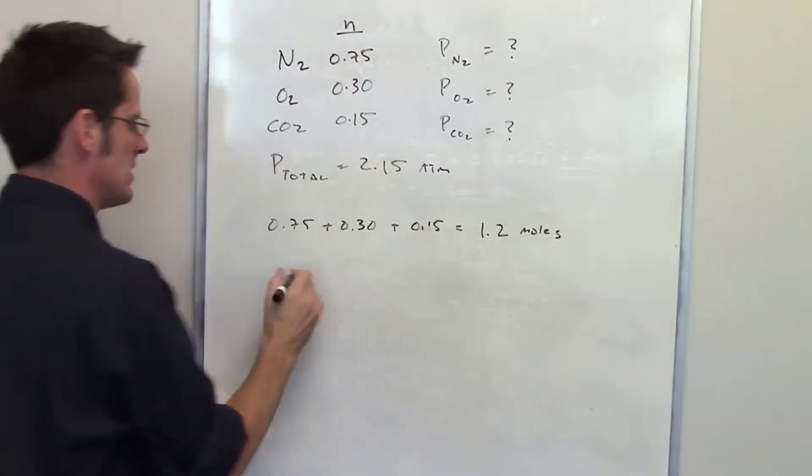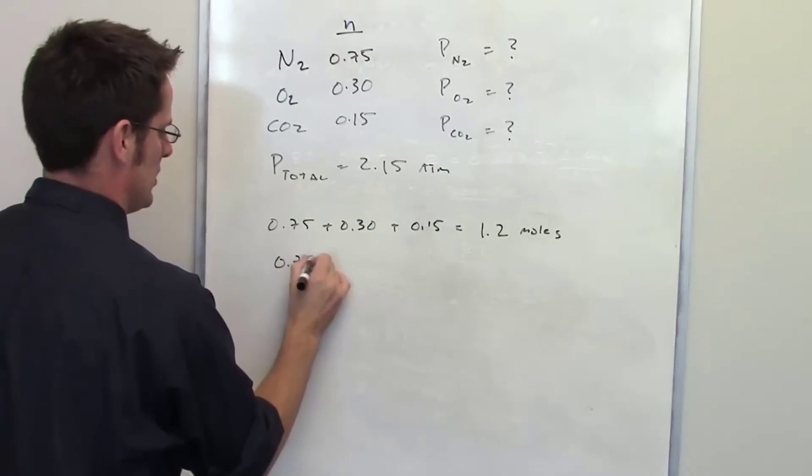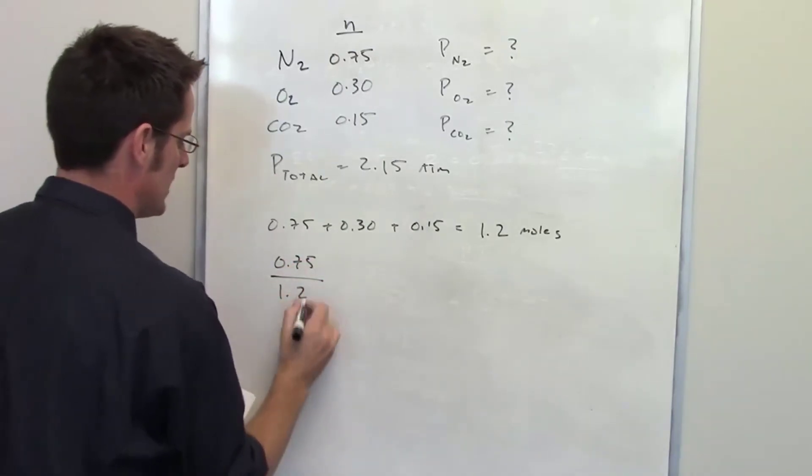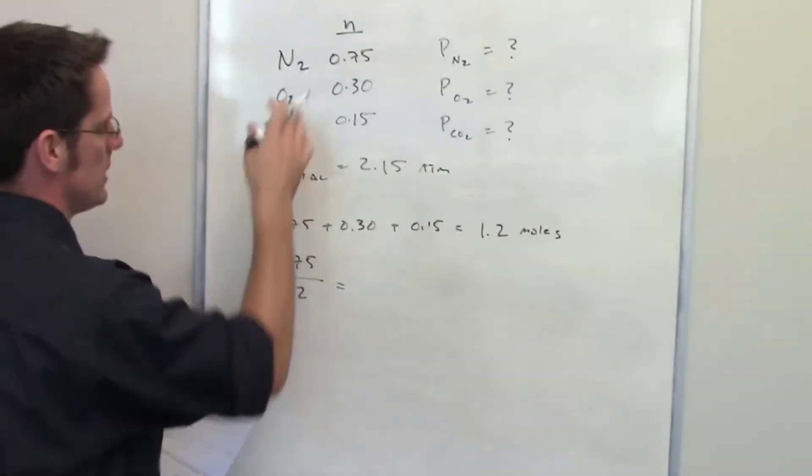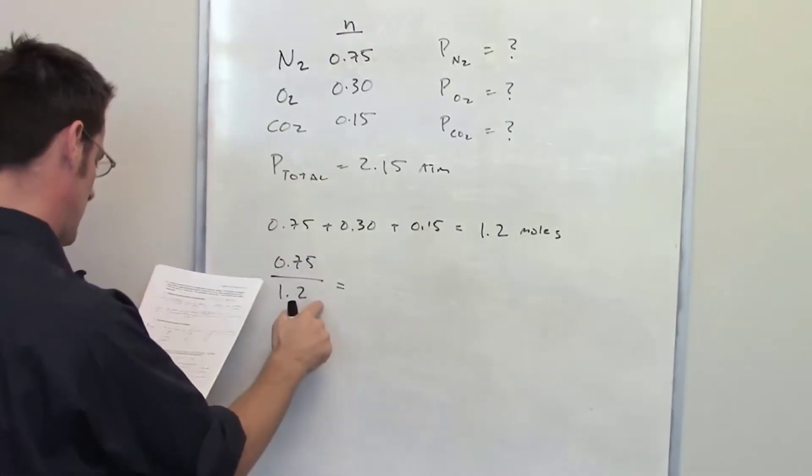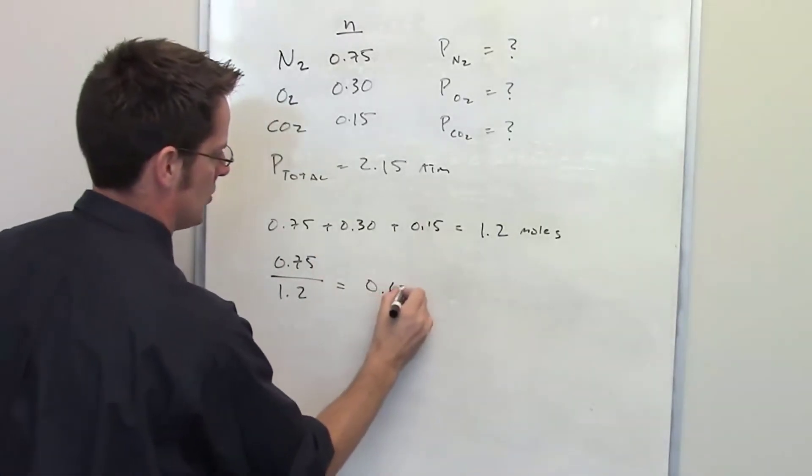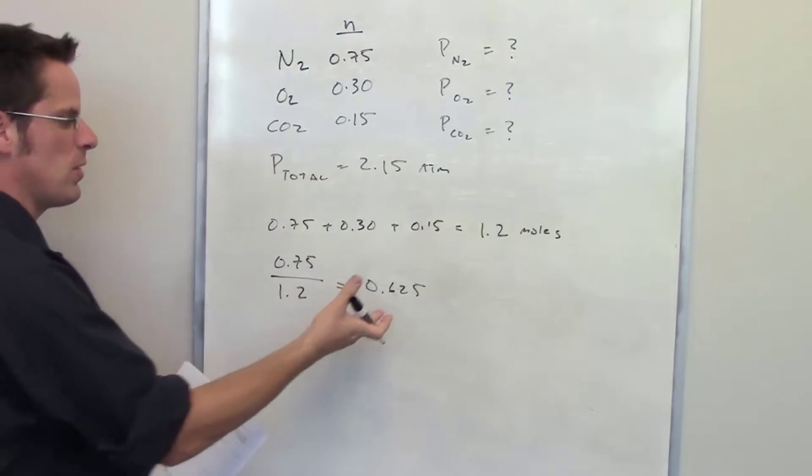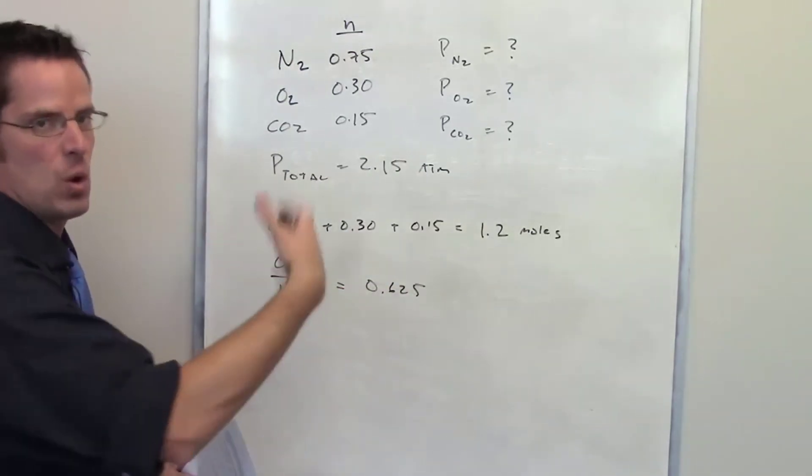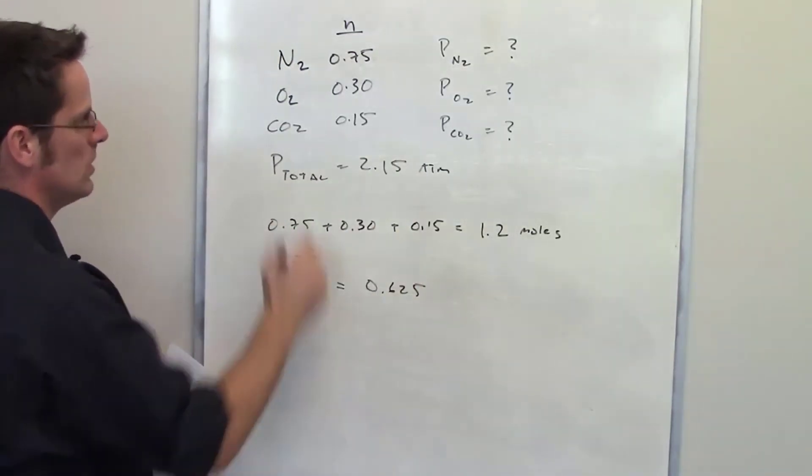Now if I take each one of these and divide it by 1.2, I can get the total percentage or mole fraction for each one of these gases. 0.75 divided by 1.2 is 0.625, which means that 62.5% of all of the moles of gases in that chamber are nitrogen.